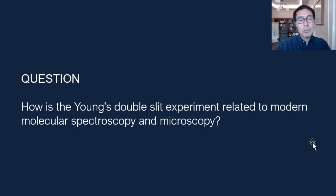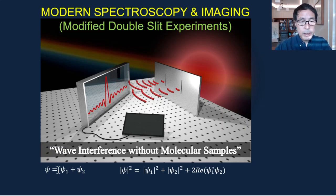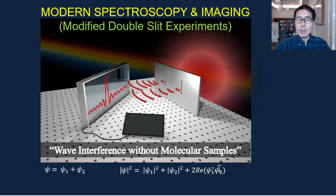This double slit experiment is relatively easy to understand. But how is it related to modern molecular spectroscopy and microscopy? Here again is the double slit scheme: two coherent lights produce an interference pattern with strong fringe visibility. The superposition state of waves one and two gives a probability distribution as the sum of three terms. The last term — two times the real part of the wave product — is responsible for the fringe pattern.